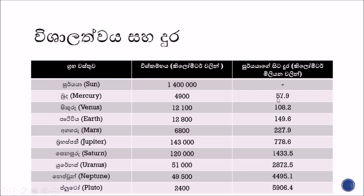There are hundreds by 100 kilometers, thousands of millions of people. But in the first one, the first million is 1.5 million, 1.4 million, and the second one is about 2 million.